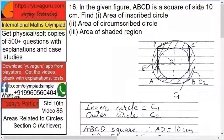ABCD is a square of side 10 centimeters. Find area of the inscribed circle, area of the circumscribed circle, and area of the shaded region. So this outer circle area we have to find, area of the inner circle we have to find, this smaller one, and the shaded portion.